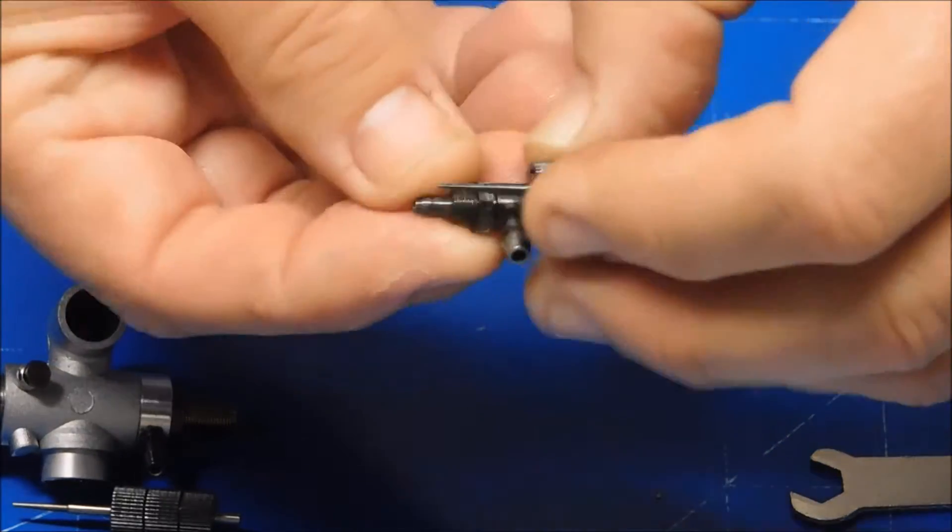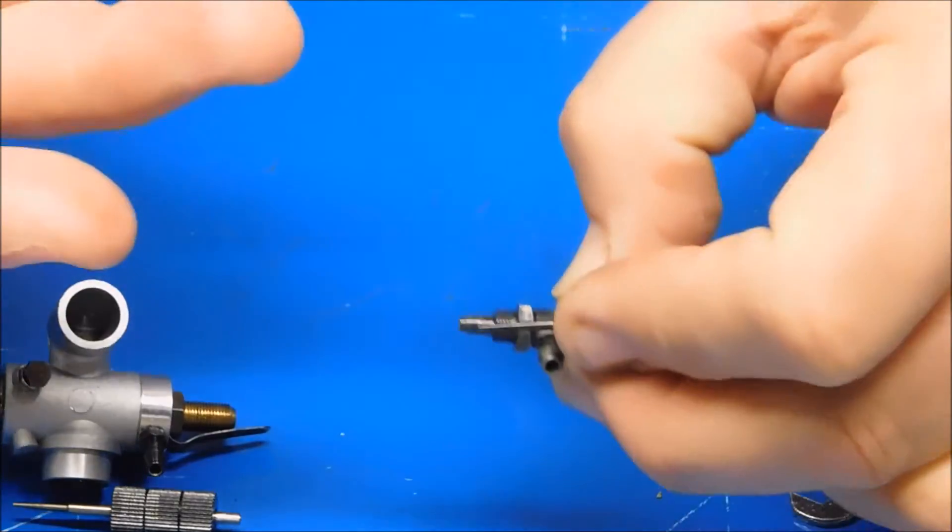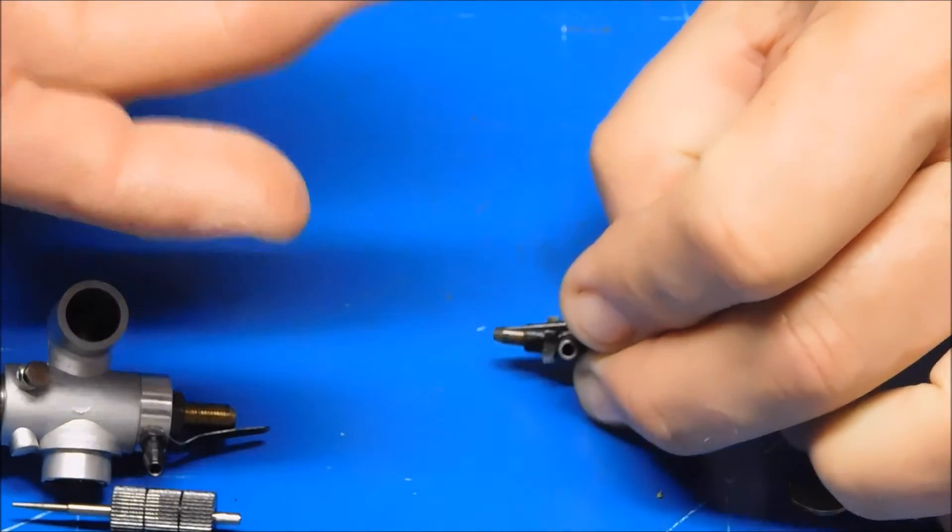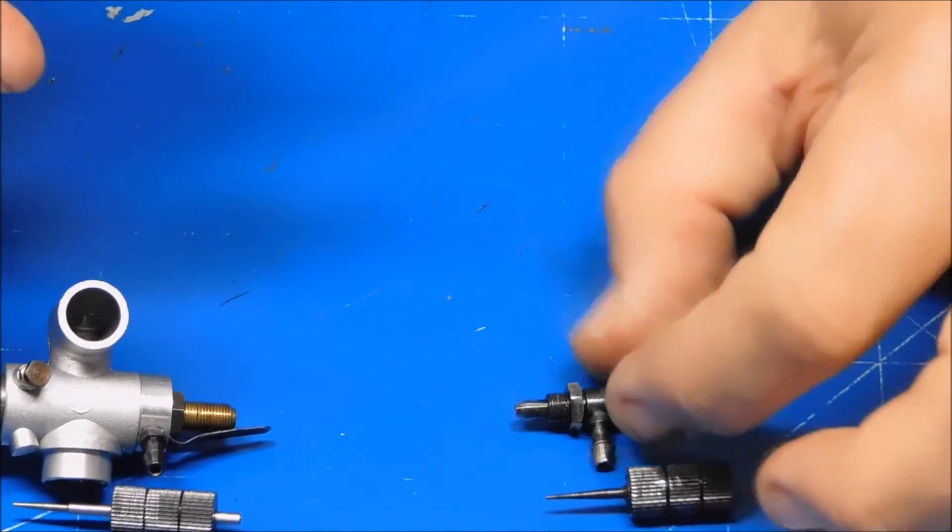So even when this is threaded completely in, I can't close the fuel supply off completely. Thus, I can't actually lean this engine out.